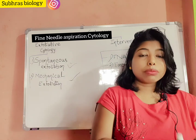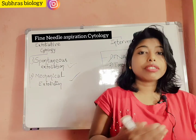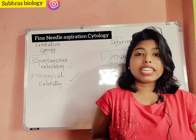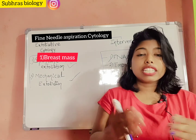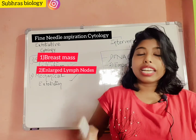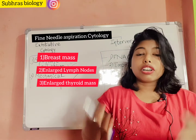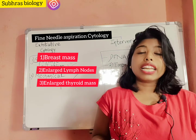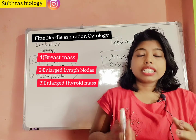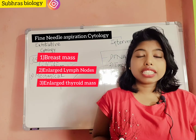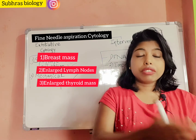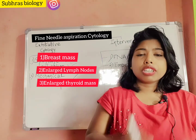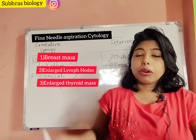The sites from which we collect FNAC samples include: breast mass, enlarged lymph node, enlarged thyroid mass, and superficial soft body tissue. We also frequently collect FNAC samples from the pelvic area, prostate gland, bones, joint spaces, retroperitoneum, and lungs.